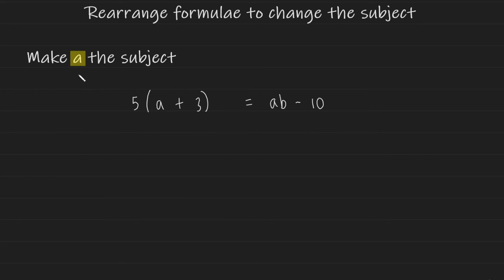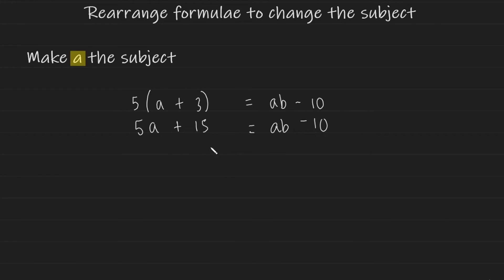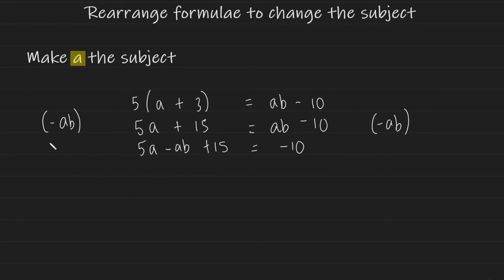Let's take a look at a problem where the subject you'd like to rearrange for — in this case a — is on both sides of the equation. First, always expand the brackets: 5a plus 15 equals ab minus 10. The next step is to get all of the a's onto one side, so I'll subtract ab from both sides to eliminate it from the right, leaving 5a minus ab plus 15 equals minus 10. Then subtract 15 from both sides, leaving 5a minus ab equals negative 25.